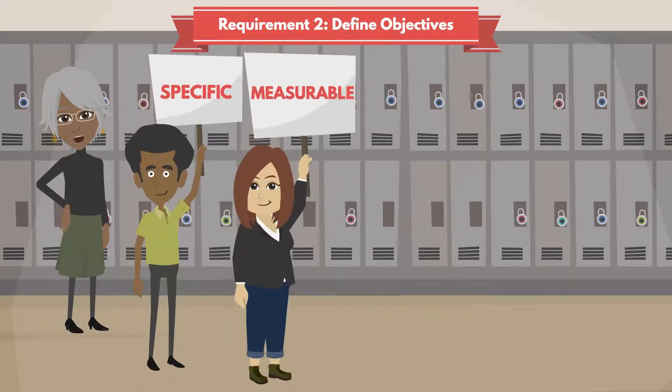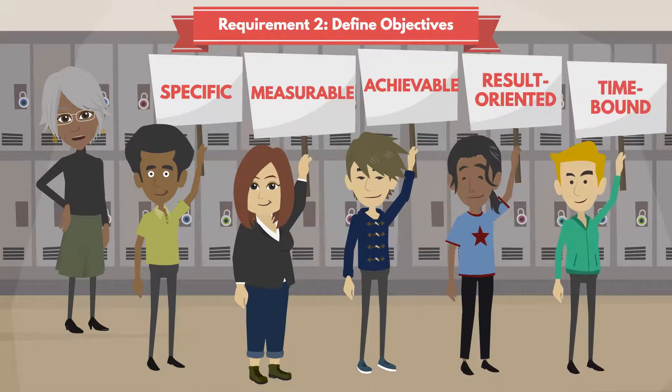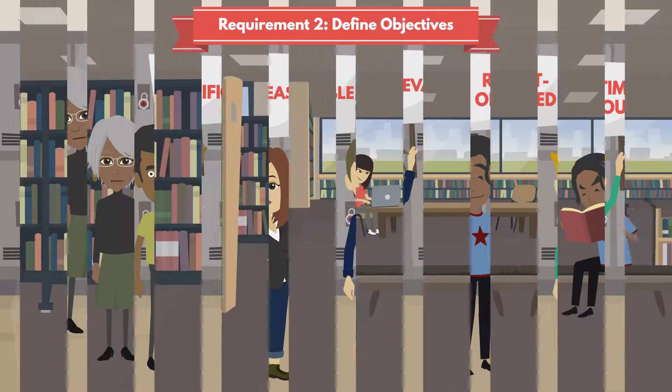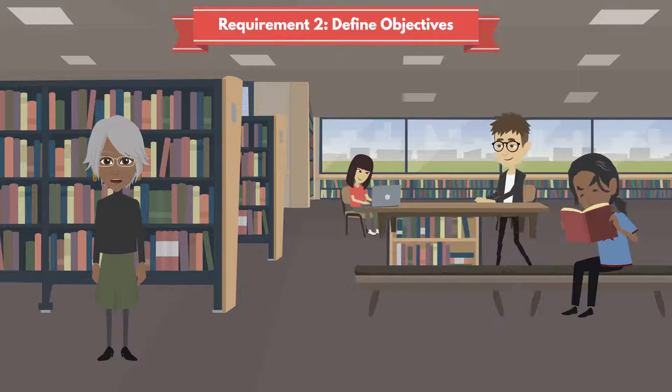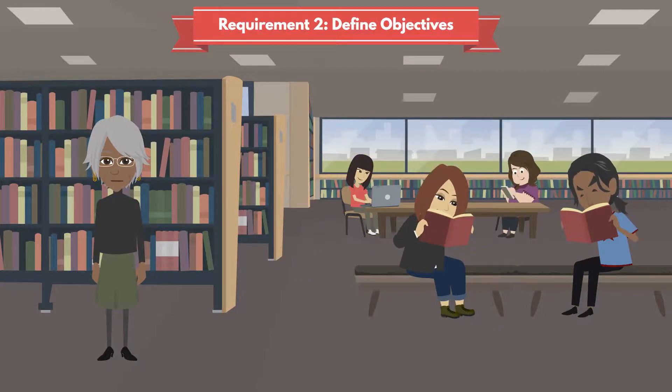You define specific, measurable, achievable, result-orientated and time-bound objectives on how to tackle the identified gender inequalities at your technical university. For example, to increase the share of female researchers by 10% in three years.